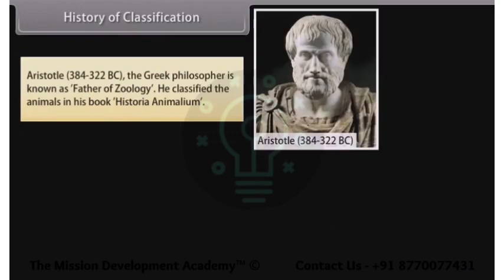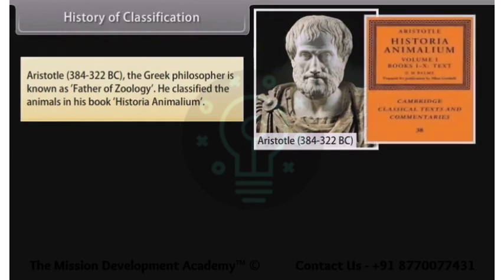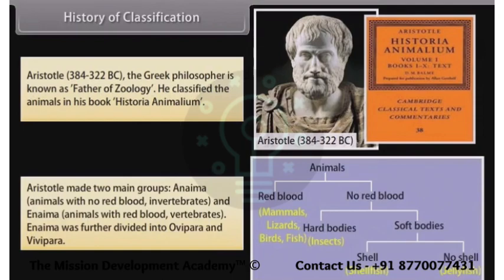Aristotle (384–322 BC), the Greek philosopher known as the father of zoology, classified animals in his book Historia Animalium. He made two main groups: Anima — animals with no red blood (invertebrates), and Anima — animals with red blood (vertebrates). Anima was further divided into ovipara and vivipara.